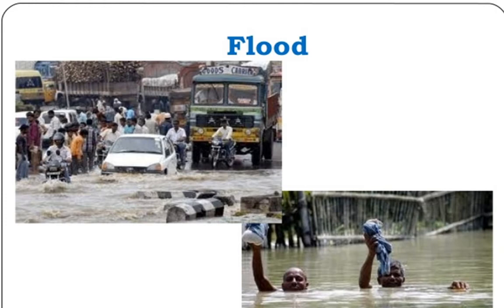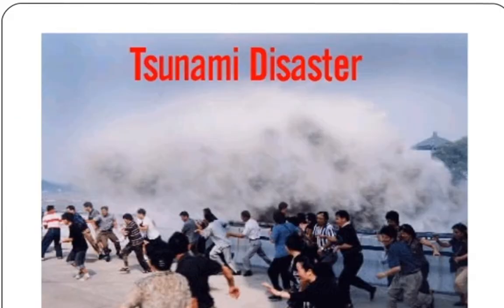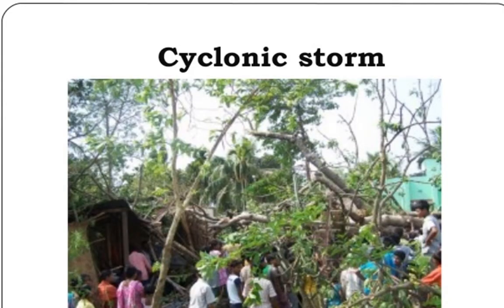Next is the tsunami disaster. As we have learned, inside the earth there are tectonic plates that are always moving. When there is an earthquake, that same movement happens in the seas and oceans, which causes a tsunami. So an earthquake causes a tsunami disaster.